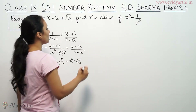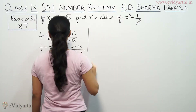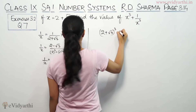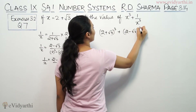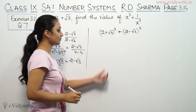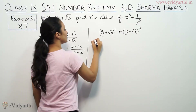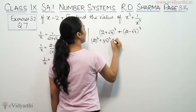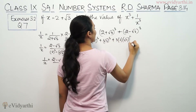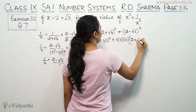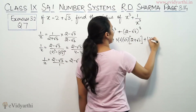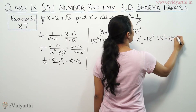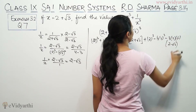Now we find x cube plus 1 by x cube. We use the identity: a cube plus b cube equals (a plus b) times (a squared minus ab plus b squared), which expands as a cube plus b cube plus 3ab(a minus b) for the sum form, and a cube minus b cube minus 3ab(a minus b) for the difference form.